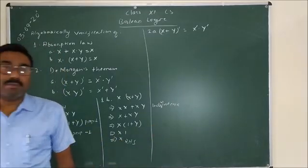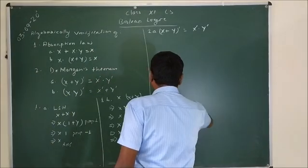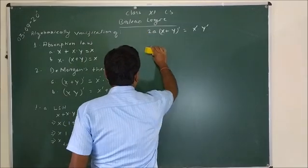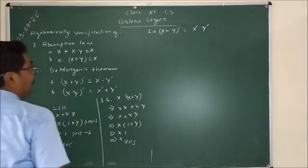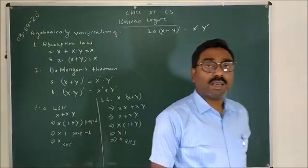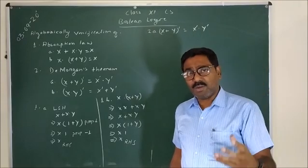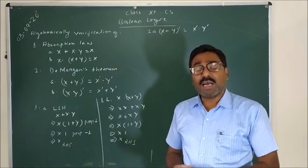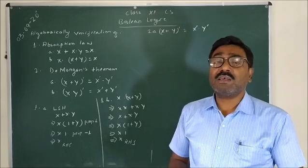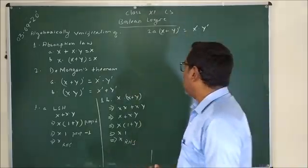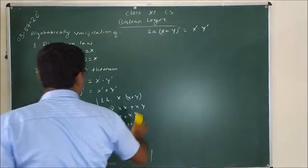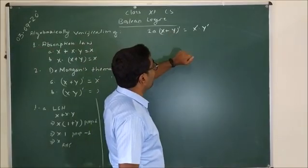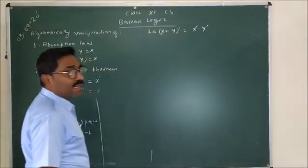Now we come to the De Morgan theorem. In the case of De Morgan's theorem, we have to use a different strategy where both the left hand side and the right hand side are derived to a common value. The first expression is (x plus y)' is equal to x'·y'.